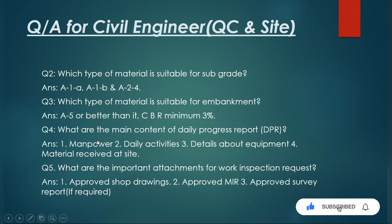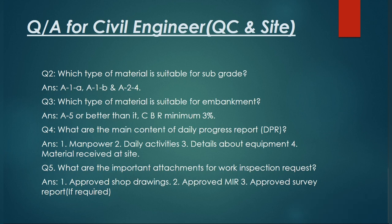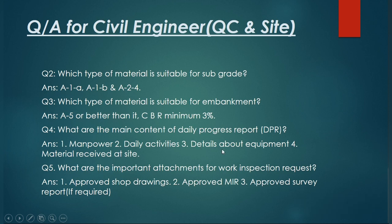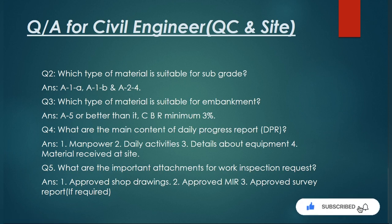Question number four: what are the main contents of a daily progress report? Many interviewers ask this from site engineers. The main contents of the DPR — daily progress report — include details about the manpower present at site, daily activities going on at site, equipment being used at site, materials received at site, and safety matters such as toolbox meetings and safety man-hours.